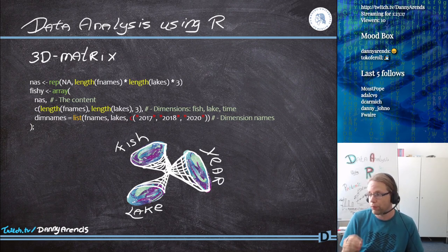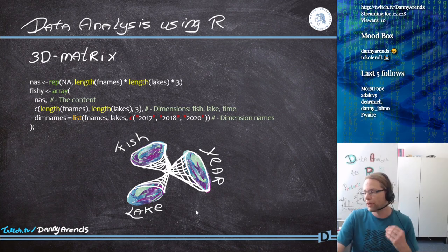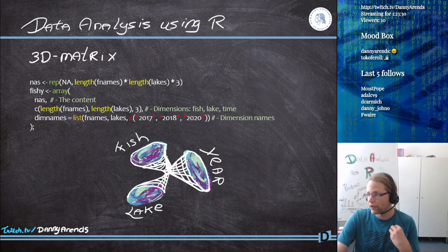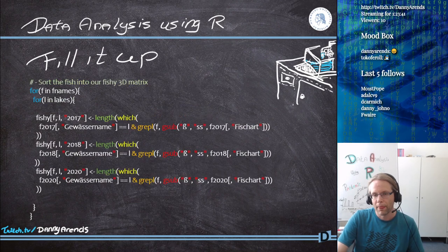This will simplify our code a lot. We have a three-dimensional matrix with a fish dimension, a lake dimension, and a year dimension. By putting it in a 3D matrix, we can switch between dimensions very easily using things like the apply function. The apply function can also operate across three different dimensions. But first, let's fill it up.